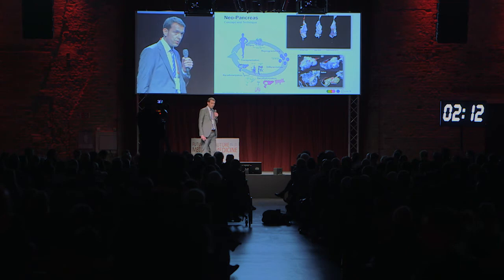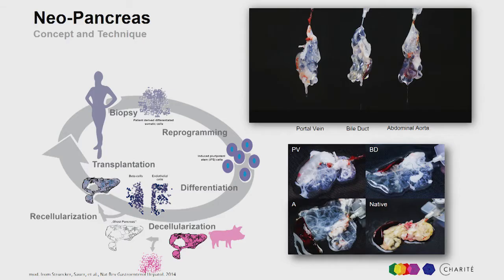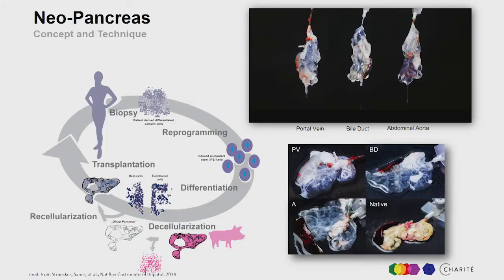To translate this concept into a clinical setting, our idea is the following. We want to take a skin biopsy from a patient suffering from diabetes, reprogram the cells into induced pluripotent stem cells, differentiate those cells into insulin-producing beta cells, and finally repopulate a decellularized porcine pancreas with those cells to generate a neopancreas. This neopancreas will be implanted into the same patient, and the big advantage is that the patient will not need immunosuppression nor suffer from pancreatitis.